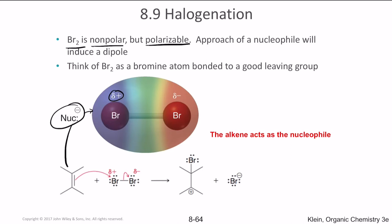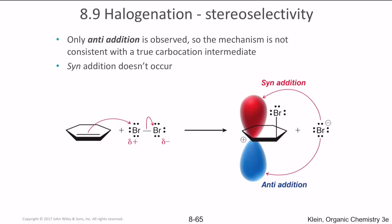The alkene is the nucleophile here. As it approaches the bromine, it creates a net positive charge on one bromine and a net negative charge on the other, resulting in electron transfer to the other bromine, forming a carbocation. The carbocation is then attacked by the nucleophile, forming the final product. If attack occurred on the same side it would be syn-addition, but the bromine blocks that side, so the reaction occurs on the other side — that is why it undergoes anti-addition.